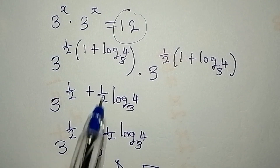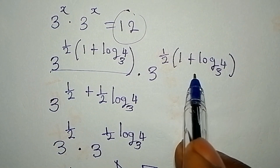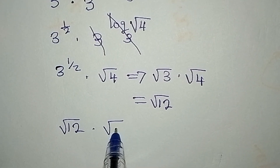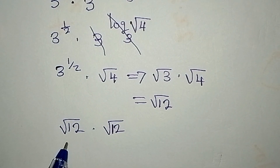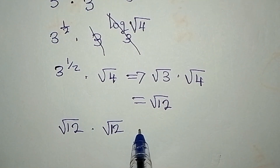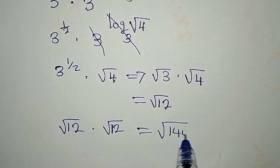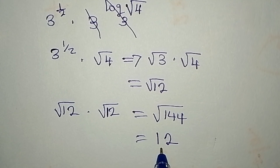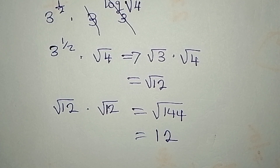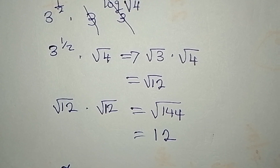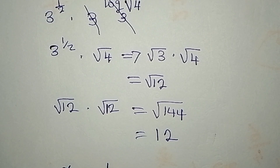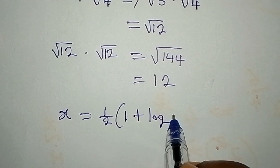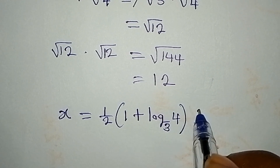This is just for one of the x values, and the other gives the same result. So we are having square root of 12 multiplied by square root of 12, which gives us square root of 144, and square root of 144 is 12 — the same 12 we had on the right-hand side of the equation. This confirms that x is truly equal to one half times 1 plus log 4 to base 3. Thank you for watching — if you love this, subscribe to my channel and keep liking the video.